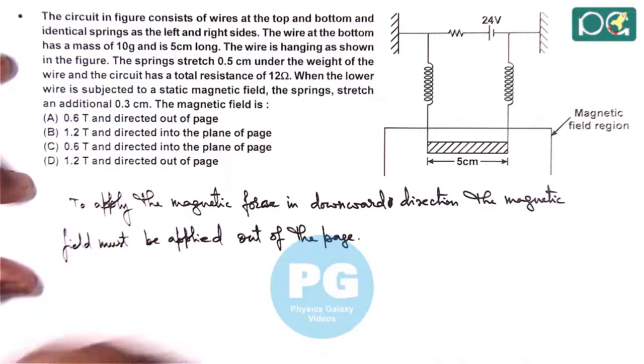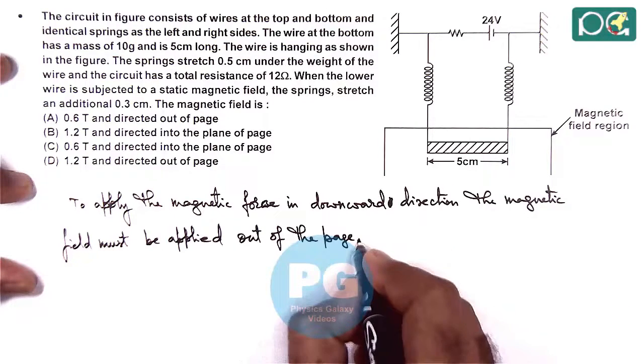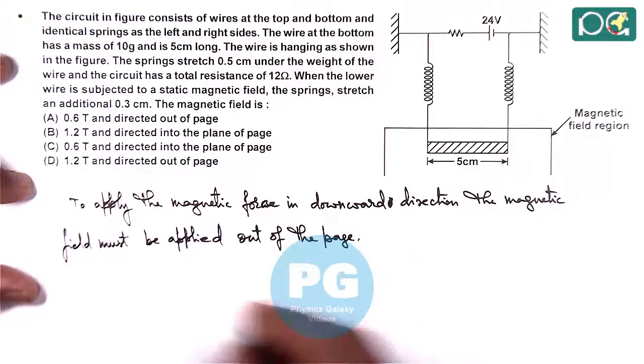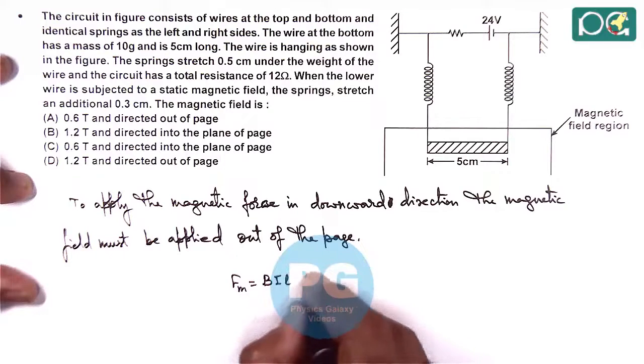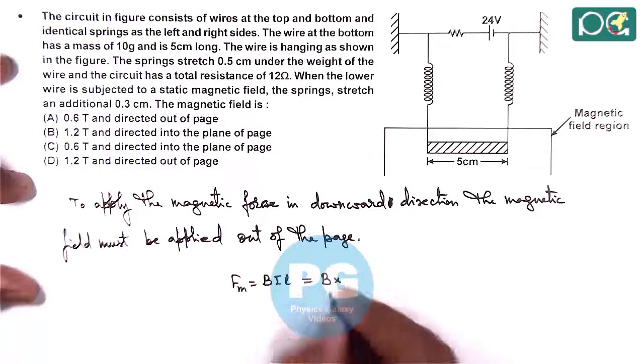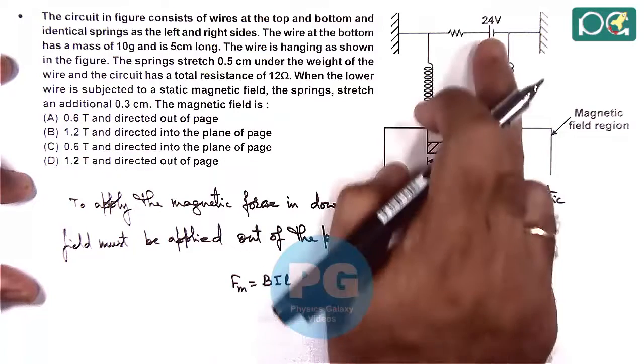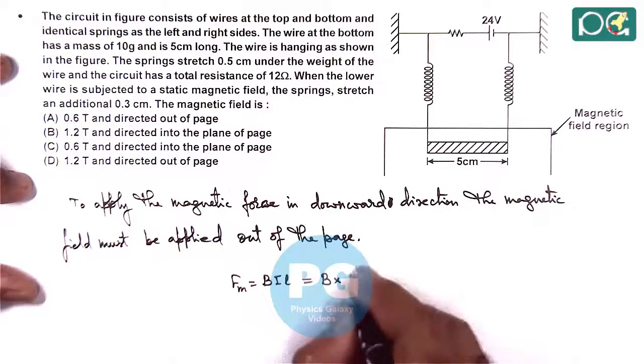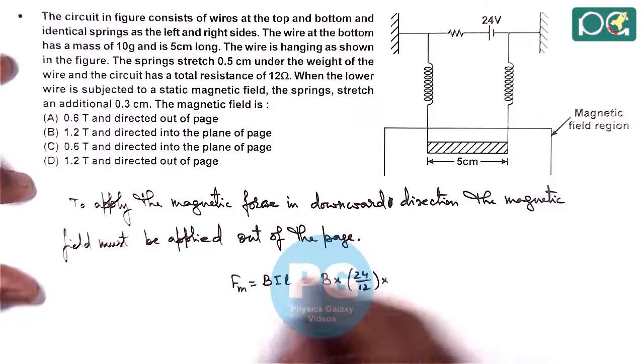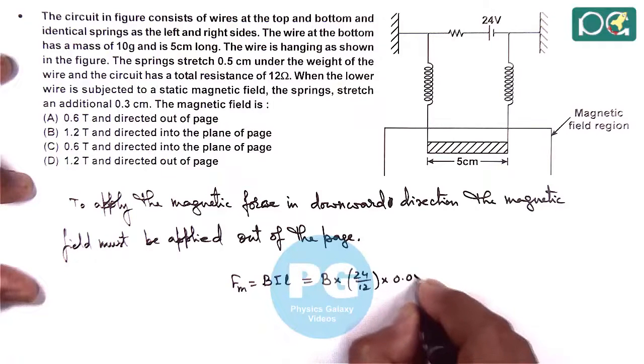So in this case, here we can see the magnetic force acting here would be BIL. The numerical value would be B times the current. Here we can write 24 volts is the battery and 12 ohms is the resistance, so this is 24 by 12. The length of wire is 0.05 meters.